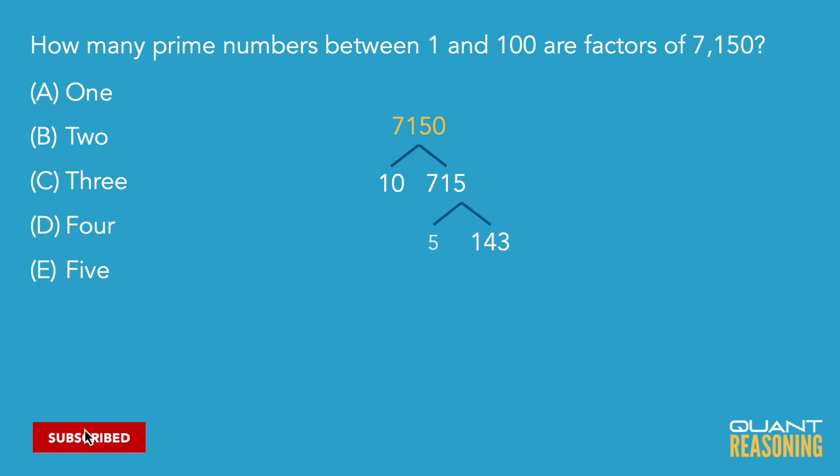Now, 143 doesn't have an obvious factor, but if I think of it as 130 plus 13, I realize that it's 11 times 13. And that's probably the toughest part of this question, is to find the factors of 143 and not mistakenly just assume that it's a prime number.